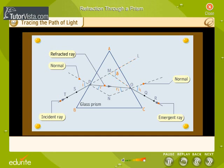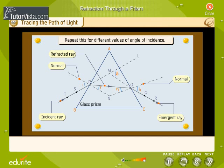Angle of deviation is the angle through which an incident ray deviates. Repeat this for different values of angle of incidence.